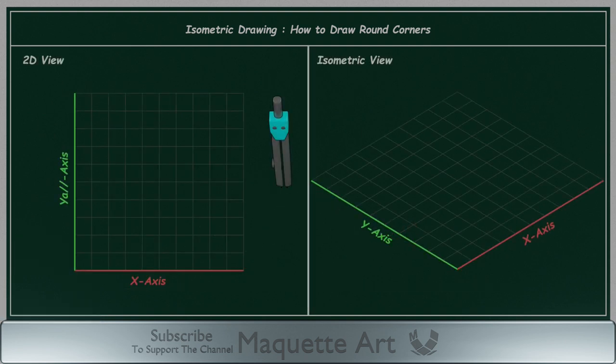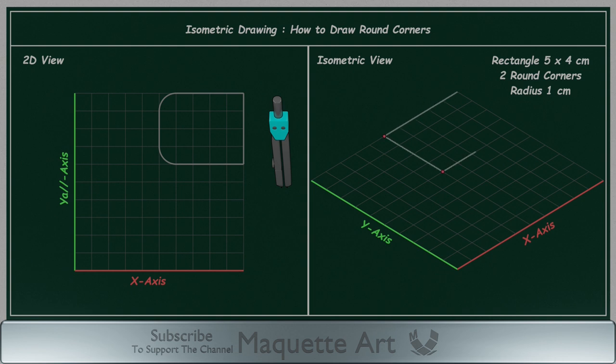Now after you know this information, we can move to the next step of drawing the round corners. We will draw this shape in isometric view. A rectangle, 5 by 4 cm, with two round corners of radius 1 cm. First we will draw the rectangle, 5 by 4 cm.